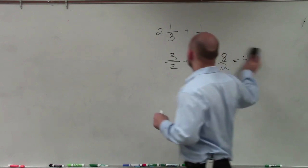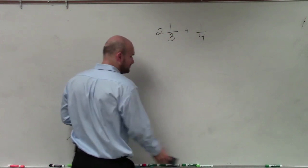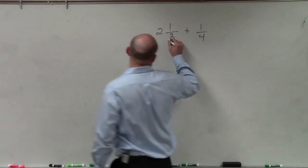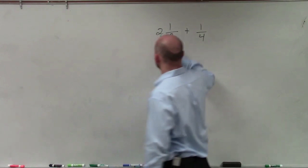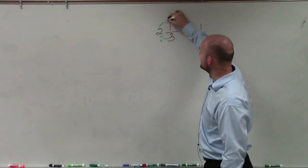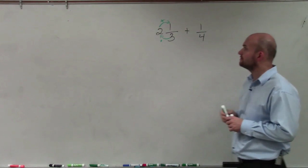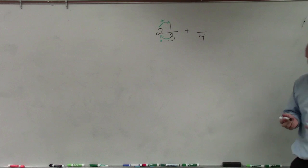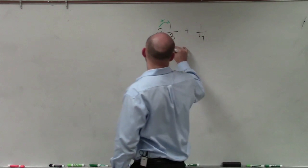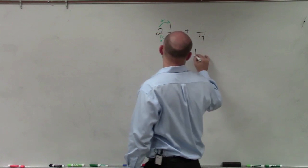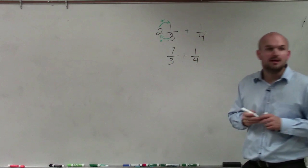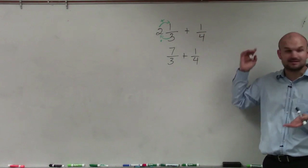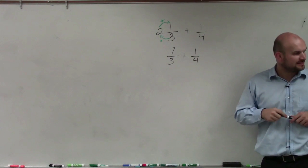In this case, we have a mixed number added to a fraction. So the first thing we need to do is convert our mixed number into an improper fraction. To do that, we multiply our denominator times our whole number, and then add that to our numerator. So my improper fraction would be 2 times 3, which is 6, plus 1 is 7. So I have 7 thirds plus 1 fourth. But now they do not have common denominators, so I can't just add 7 and 1.